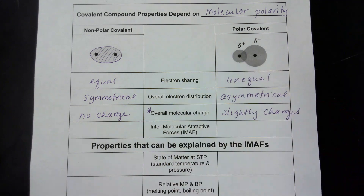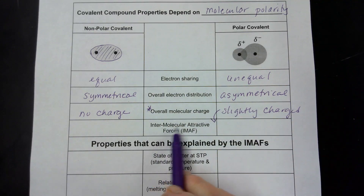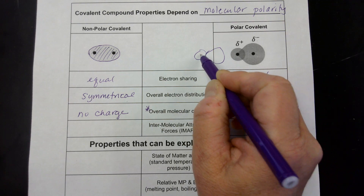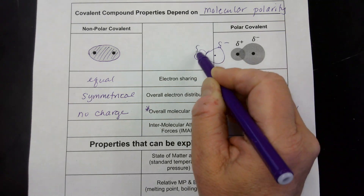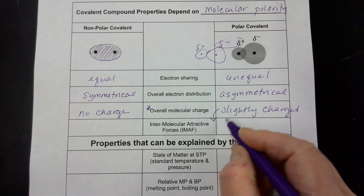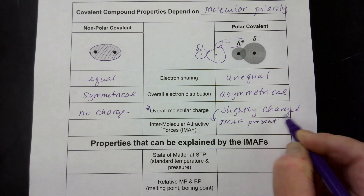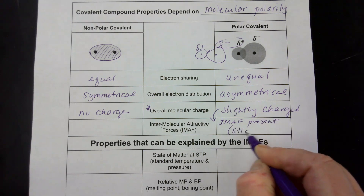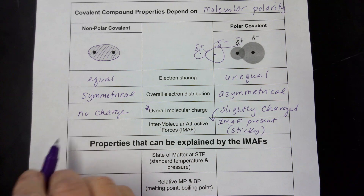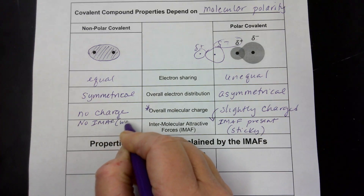That's what the delta negative and the delta positive are referring to. The overall molecular charge means that there will be intermolecular attractive forces. If you bring in a second one of these molecules, you can see that the negative end of this molecule is going to be attracted to the positive end of that molecule. That's going to mean that there are intermolecular attractive forces present, which means this molecule is going to be sticky to itself.